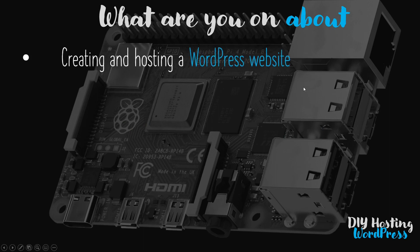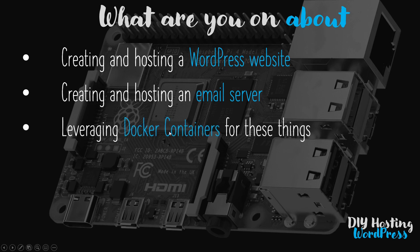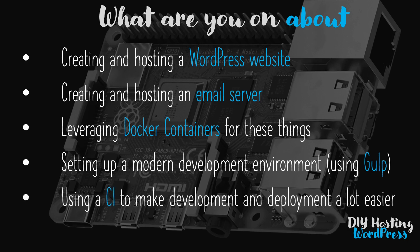So just to summarise: we're going to create a WordPress website and host it on a Raspberry Pi. We're going to create and host an email server, which is required — particularly for WordPress — for things like contact forms and logging in to your website. We're going to leverage Docker containers to develop things in a modern way and because it makes deploying the website so much easier. We're going to set up a modern development environment, and I'll show you Gulp, which will make your WordPress development so much easier. And then I'm going to show you how to make a continuous integration pipeline for WordPress, which is a huge undertaking but will make your life so much easier.